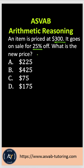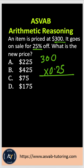To solve this problem, first you have to find how much the discount is. You have the $300 original price and 25% off, so you have to multiply that by 0.25. Anytime you multiply a percent, you need to make the percent into a decimal. When you multiply decimals, forget about the decimal — so you have 300 times 25.